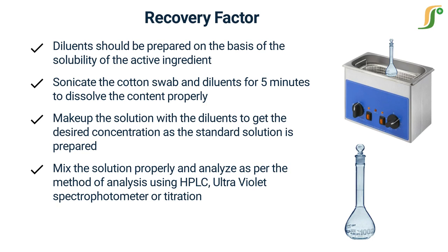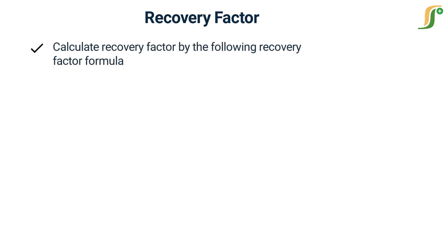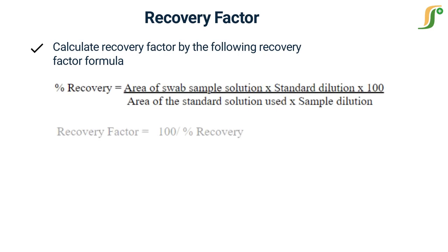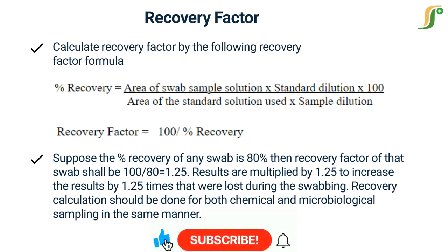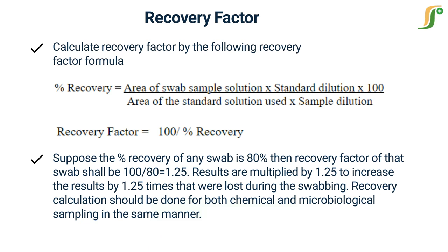Calculate the recovery factor by the following formula. Suppose the percent recovery of any swab is 80%, then the recovery factor of that swab shall be 100 divided by 80, which equals 1.25. Results are then multiplied by 1.25 to account for the material lost during swabbing. Recovery calculation should be done for both chemical and microbiological sampling in the same manner.